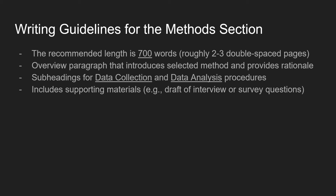Here are a few writing guidelines for the method section. The recommended length is around 700 words, roughly two to three double-spaced pages. You should have an overview paragraph introducing the selected method and providing a rationale for choosing it, and include subheadings for data collection and data analysis.